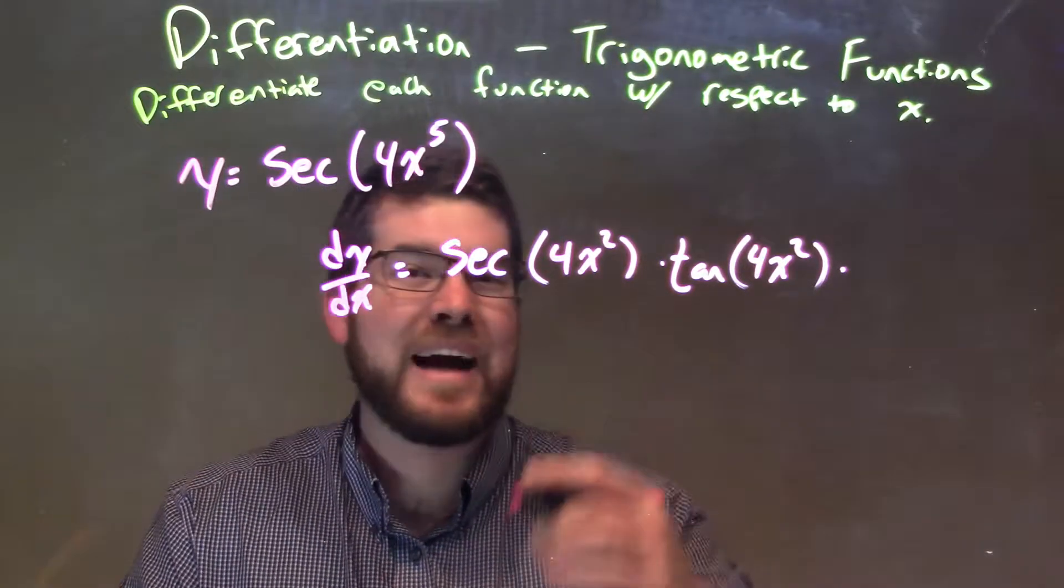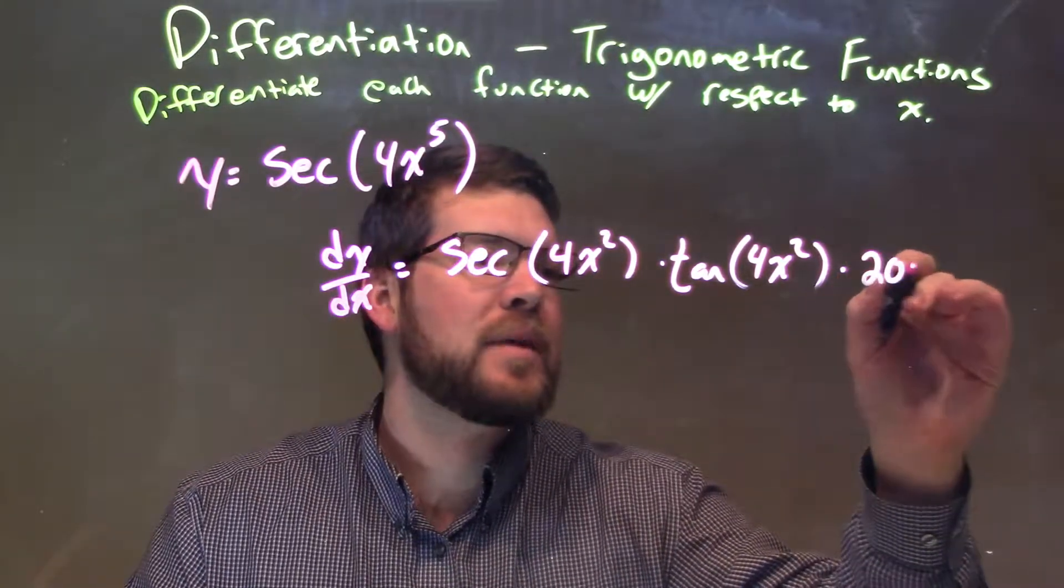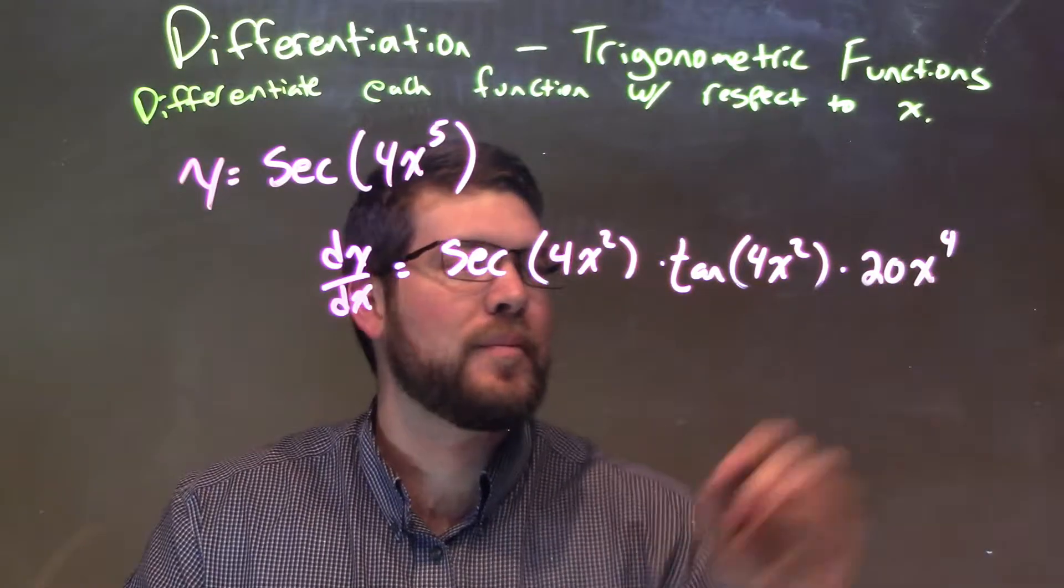All right. So we're going to take the derivative of 4x to the 5th power. That's going to be 20x to the 4th power. Okay.